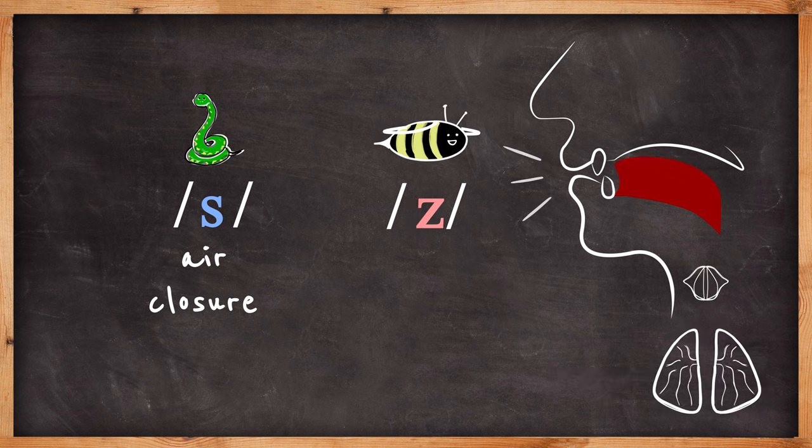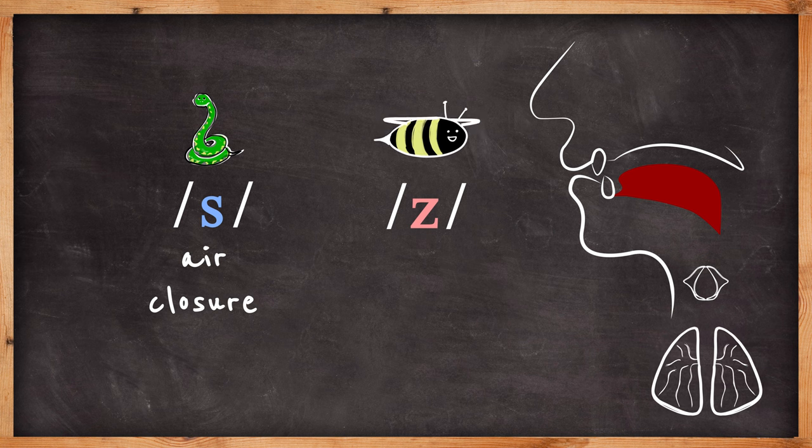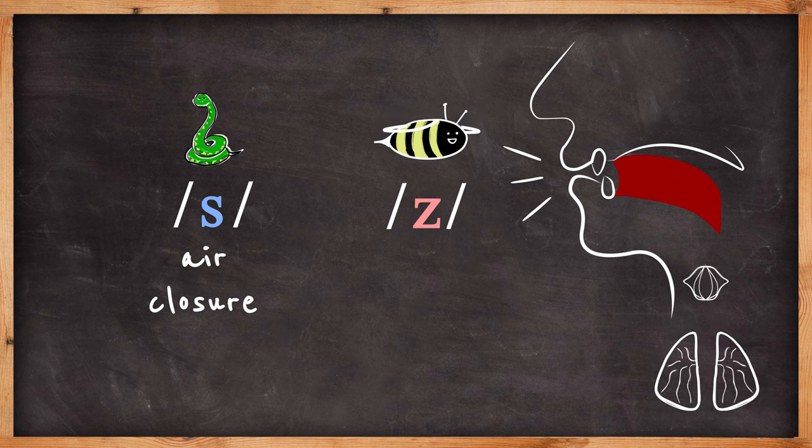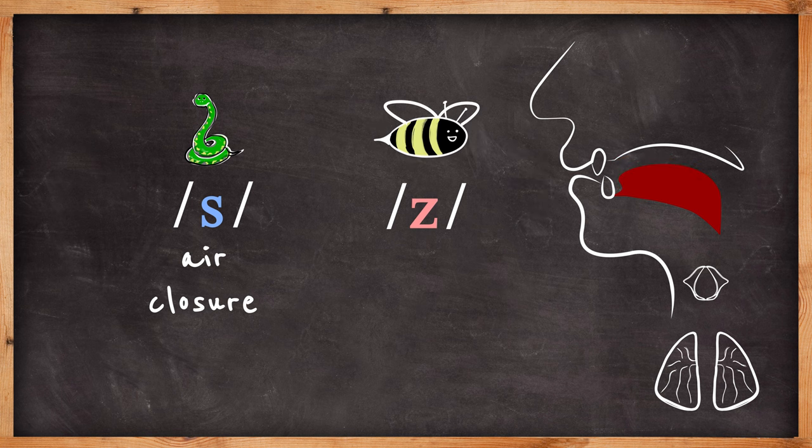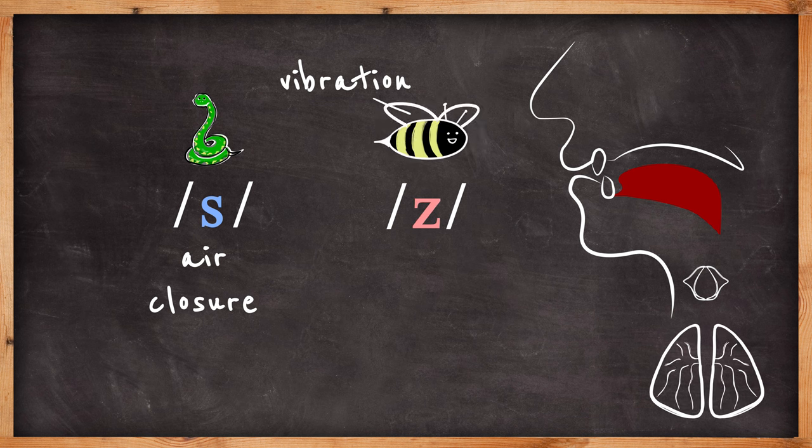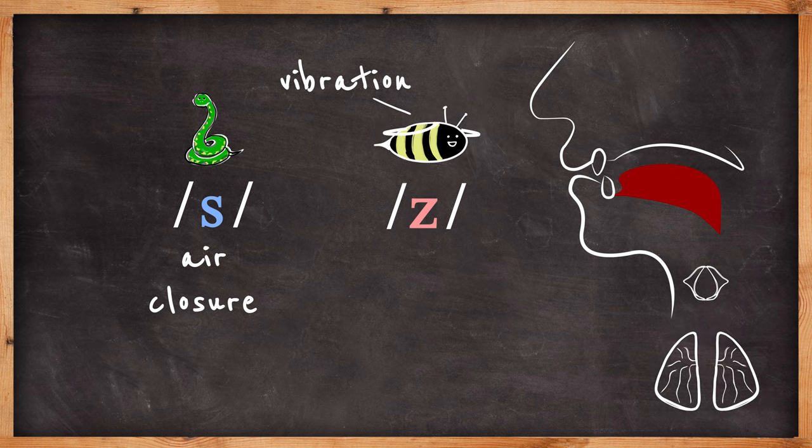And humans replicate this with air from our lungs and a closure in the mouth. The zzz in lose is different. This sounds like the buzzing of a bee. Now a bee doesn't have lungs. The noise it makes is vibration.